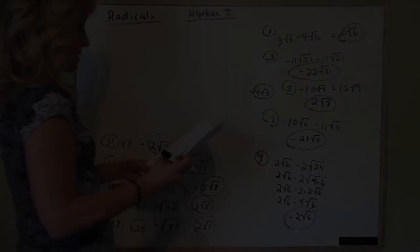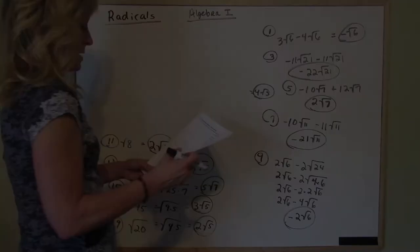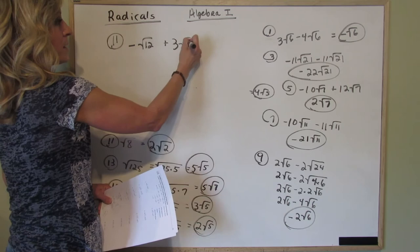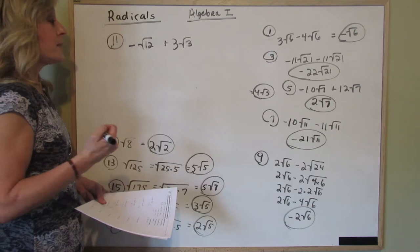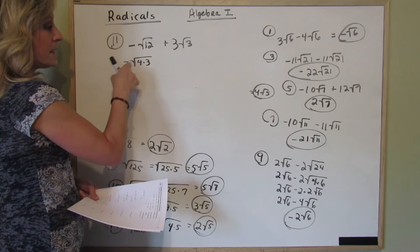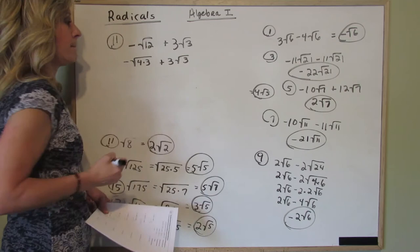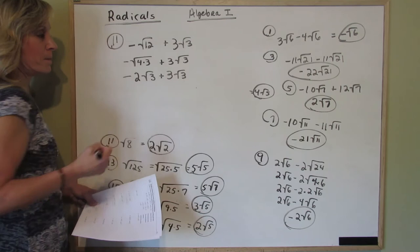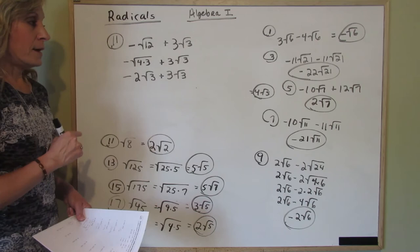Number 11, we have negative square root of 12 plus 3 square roots of 3. So is it possible to make this into something with a square root of 3? Yes. 12 is 4 times 3. So it's negative square root of 4 times 3, and I can't do anything further with 3 square roots of 3. Now, I can take the square root of 4 and that's 2. So this becomes negative 2 square roots of 3 plus 3 square roots of 3. All you need to know now is negative 2 plus 3. Well, that's 1. So we have 1 square root of 3 or just the square root of 3.